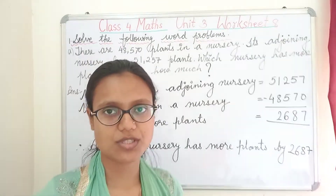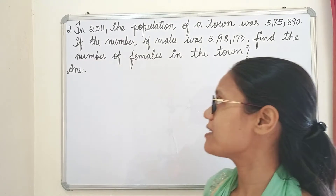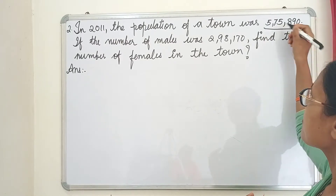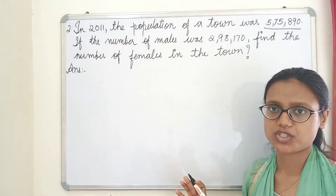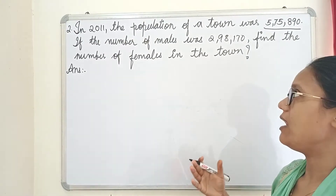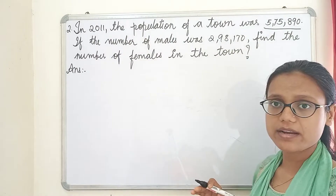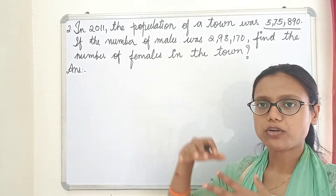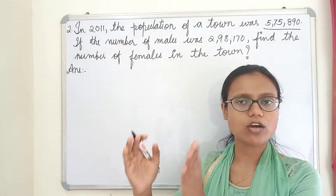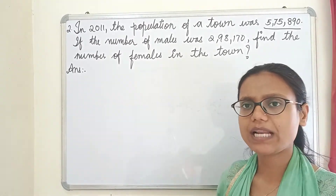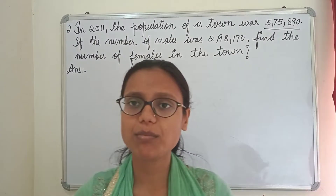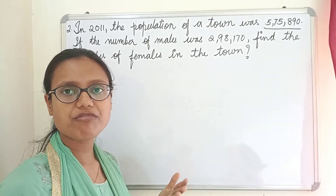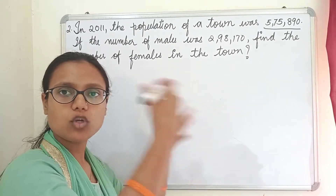The second question: in 2011 the population of a town was 5,75,890. The number of males was 2,98,170. We have to find the number of females in the town. In a total population, there are males and females, so we find females by subtracting the number of males from the total population.